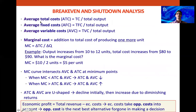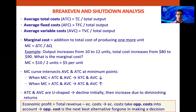So now we need to look at break-even and shutdown analysis, and we need to start with a few definitions. Average total costs — it's nice and easy to work out. All we do is take our total costs and divide by the total output.